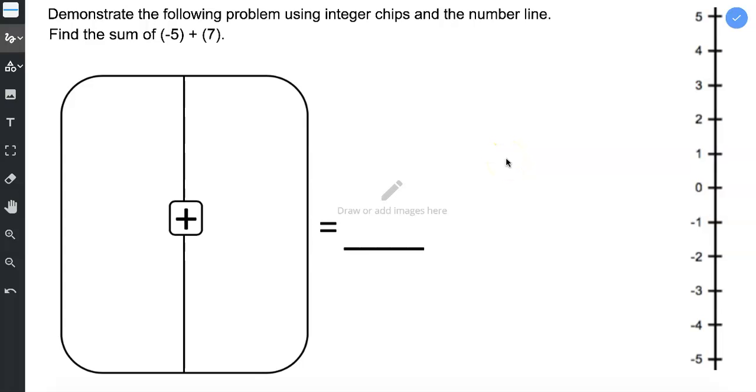Problem number six, negative five plus seven. So negative five plus a positive seven.